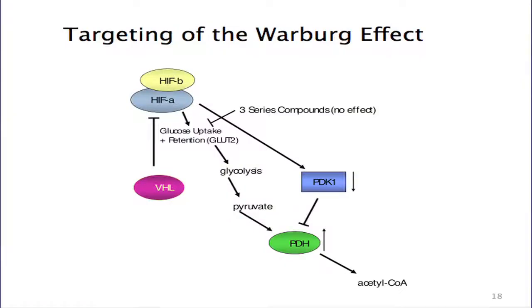The way we think this works: cells with wild-type VHL are not dependent on GLUT1 for glucose uptake and are able to perform both glycolysis and the TCA cycle. Cells that lack VHL have elevated GLUT1 levels and are highly dependent upon GLUT1. In addition, they have increased expression of pyruvate dehydrogenase kinase, which prevents pyruvate from ultimately going to acetyl-CoA. Therefore, since they're not efficient at performing the TCA cycle and their metabolic requirements are more dependent on glycolysis, they die when GLUT1 is inhibited.